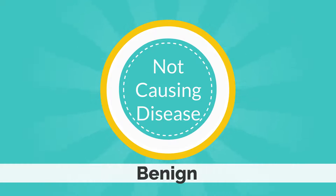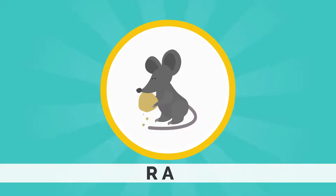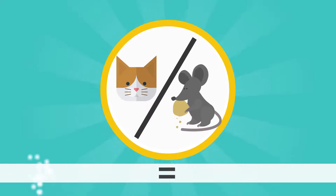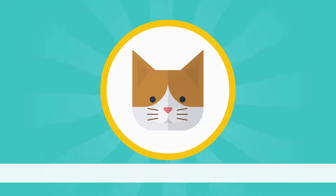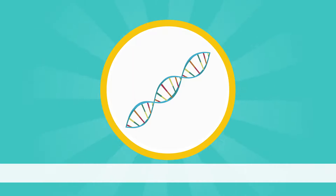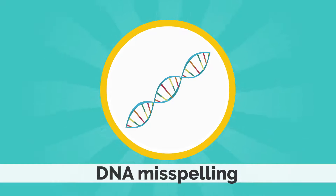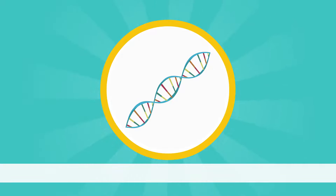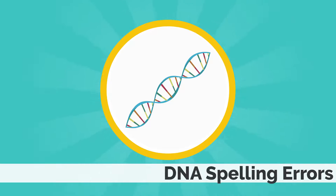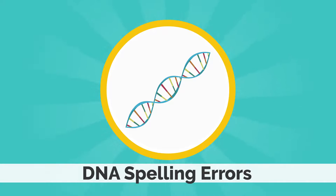Other times someone might spell "cat" as r-a-t. This time the meaning of the word has dramatically changed — instead of referring to a cat, it refers to a rat. This can cause a problem if the person wants to refer to a cat. This can also happen with DNA, where the spelling error completely changes the meaning. This is called pathogenic, which means that this spelling error can cause a genetic condition or disease.